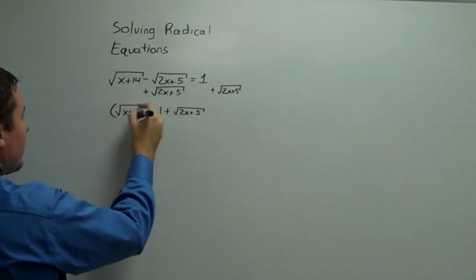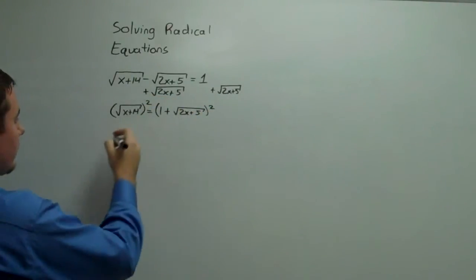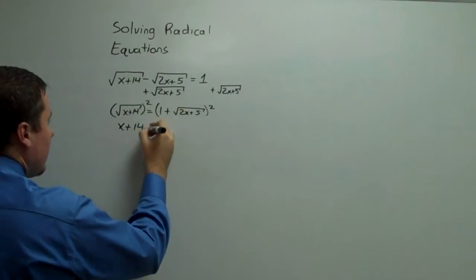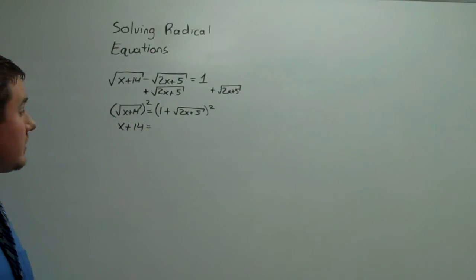At this point, we can square both sides, and that successfully gets rid of the radical over here, and we're left with x plus 14. The right-hand side, however, is a much more complicated situation.